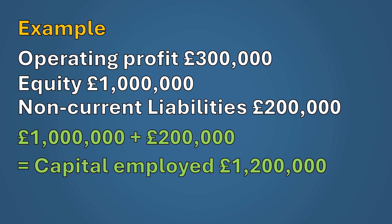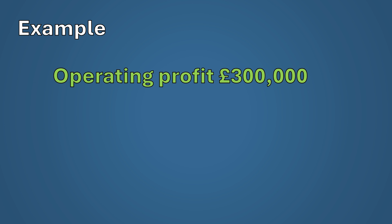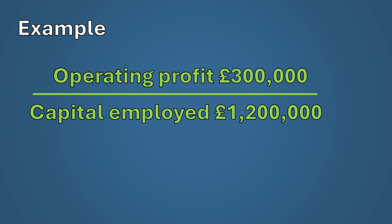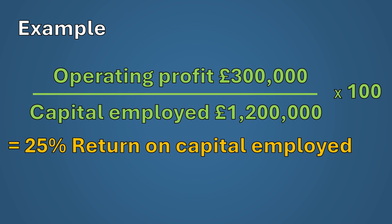Now entering the figures into the formula: operating profit of £300,000 divided by capital employed of £1.2 million, times 100, gives you 25%. That means for every one pound invested, the company is generating 25 pence in operating profit, which as a general rule is pretty good.